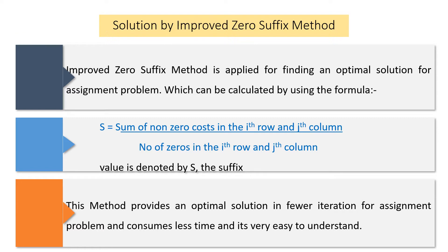The improved zero suffix method is applied for finding an optimal solution for the assignment problem. It is calculated using the formula: S equals the sum of non-zero costs in the i-th row and j-th column, divided by the number of zeros in the i-th row and j-th column. The value S is the suffix. This method provides an optimal solution in fewer iterations, consumes less time, and is very convenient and easy to understand.